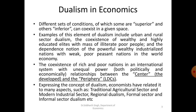How is dualism defined in economics? It has been defined differently by different scholars and economists. Different sets of conditions — some superior and others inferior — can be present in a given space and given condition. This is what dualism theory specifically deals with. Examples include urban and rural sector dualism, the presence of wealthy educated elites alongside masses of illiterate people, and the dependence of powerful wealthy industrialized nations on weak, poor, peasant nations in the world economy. The coexistence of these two different sectors is what we refer to as dualistic economies.